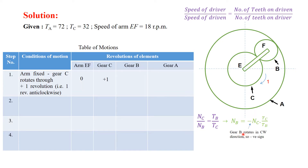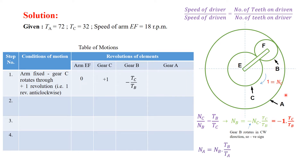A minus sign is applied because gear B rotates in the clockwise direction — since C is rotating anticlockwise, the adjacent gear B rotates in the opposite direction. Since Nc equals 1, substituting gives: Nb = −(Tc / Tb). Similarly, to get the revolution of gear A: gear B is the driver and gear A is the driven.